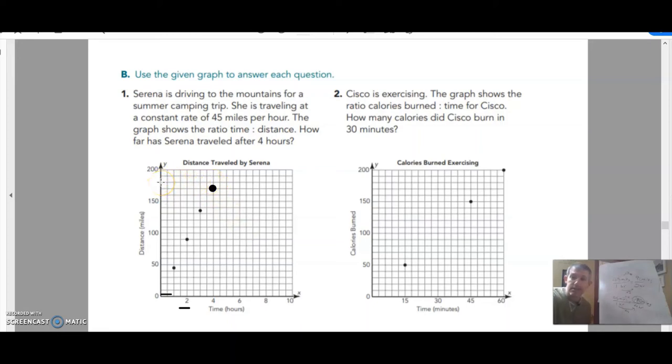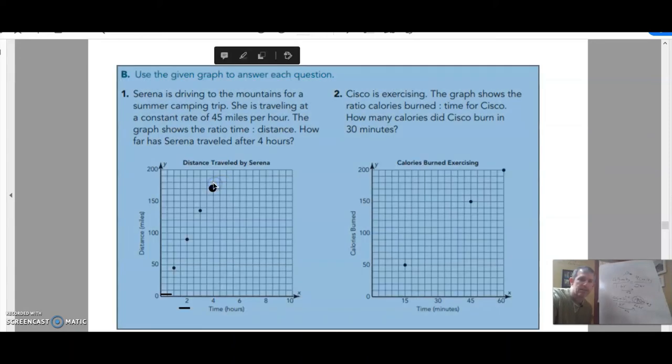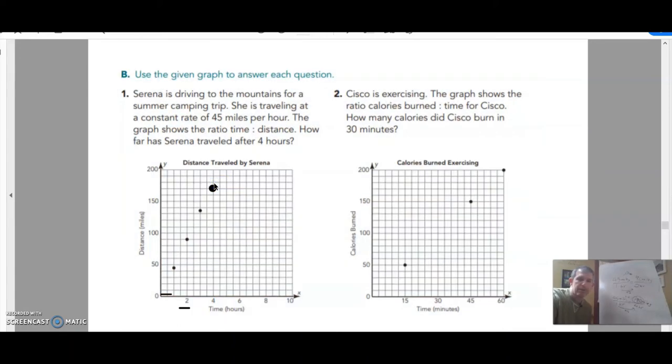So again, I guess it just goes to show sometimes our graph is not as reliable as actually doing the math. I apologize. That dot should be up one more spot there. It's going to be 180. Aren't you glad I still make mistakes on camera?